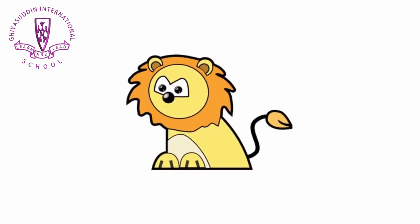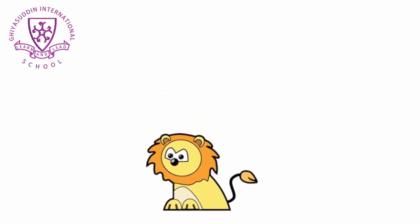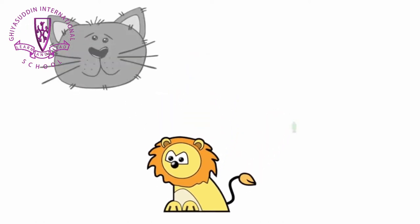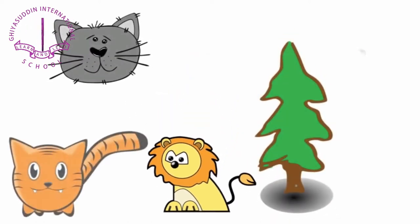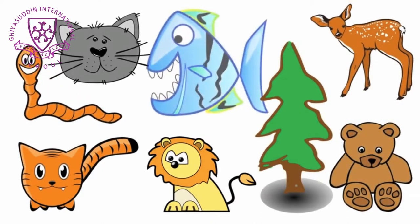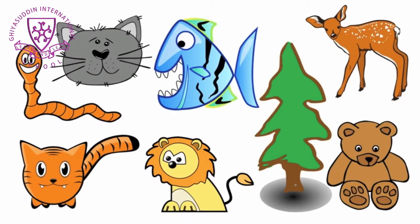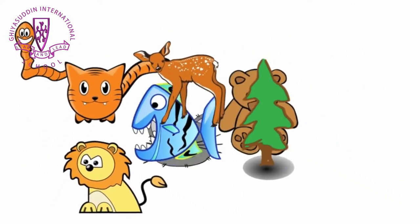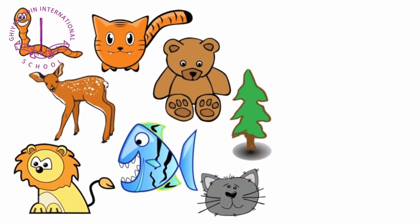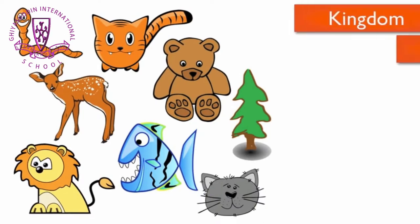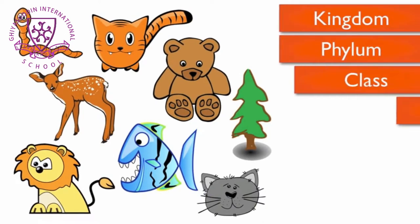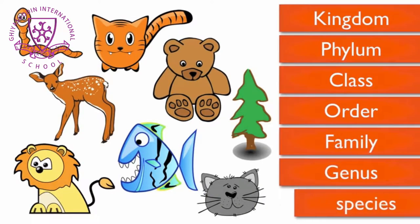Scientific classification — the grouping of organisms — can help you determine a lion's scientific name from general to specific. The levels of classification are kingdom, phylum, class, order, family, genus, and species.